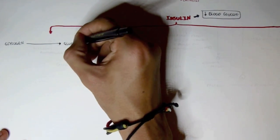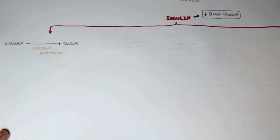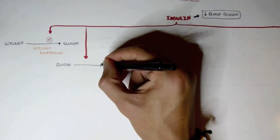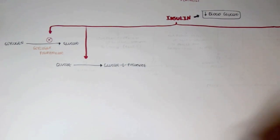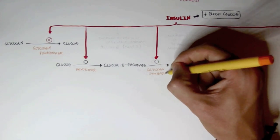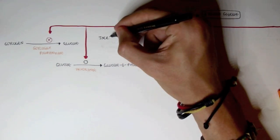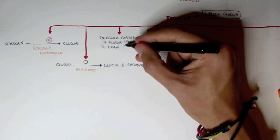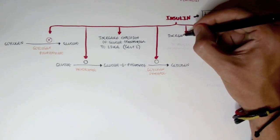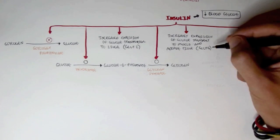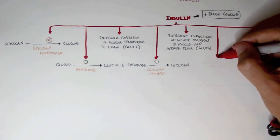Let's go over the major effects insulin has in the body. Insulin inhibits the degradation of glycogen to glucose, inhibiting glycogen phosphorylase. Insulin promotes conversion of glucose to glucose-6-phosphate, stimulating the enzyme hexokinase. Insulin stimulates the conversion of glucose-6-phosphate through a series of enzymes to glycogen, essentially stimulating glycogen synthase. Insulin also increases the expression of GLUT2 glucose transporters in the liver and GLUT4 transporters in muscle and adipose tissue.